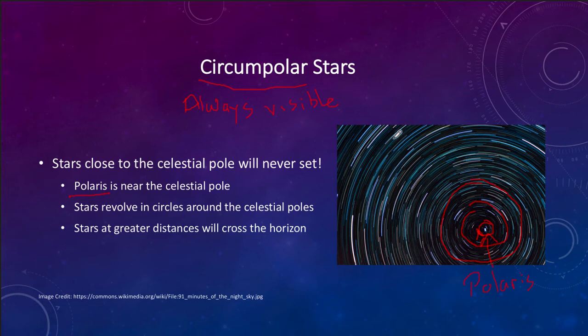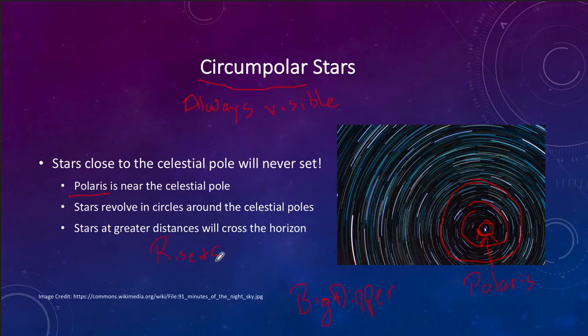Some examples of circumpolar stars include the Big Dipper, if you're in the Northern Hemisphere. The Big Dipper is a set of seven stars, and if you're far enough north, they never dip below the horizon — you can always find them. If you get further away from the pole, those stars will cross the horizon and rise and set, meaning they are no longer circumpolar. Only stars close enough to the pole never actually rise or set.